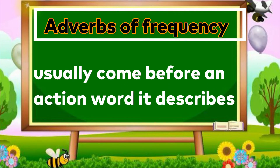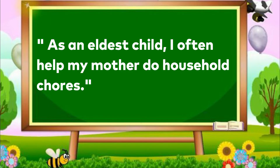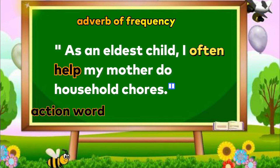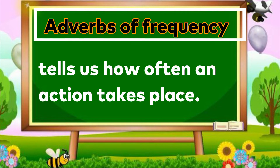Adverbs of frequency usually come before an action word it describes. In this sentence taken from the passage, identify the adverb of frequency used: 'As an eldest child, I often helped my mother do household chores.' So what adverb of frequency was used? Very good! The adverb of frequency used in this sentence is the word 'often', followed by the action word 'help'. Adverbs of frequency tell us how often an action takes place.